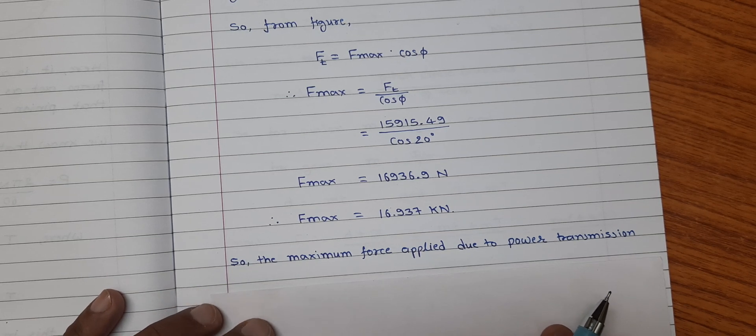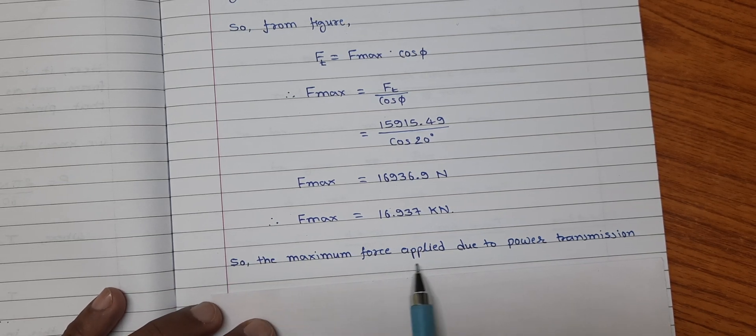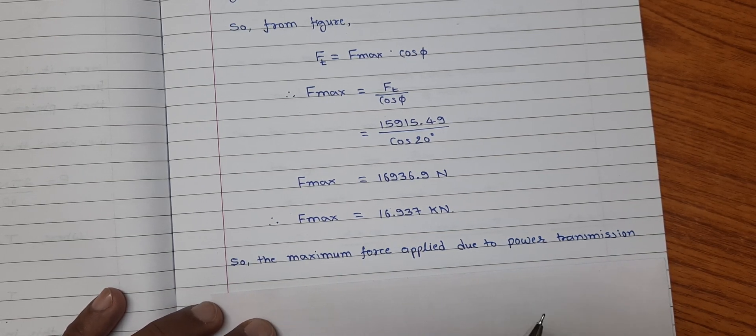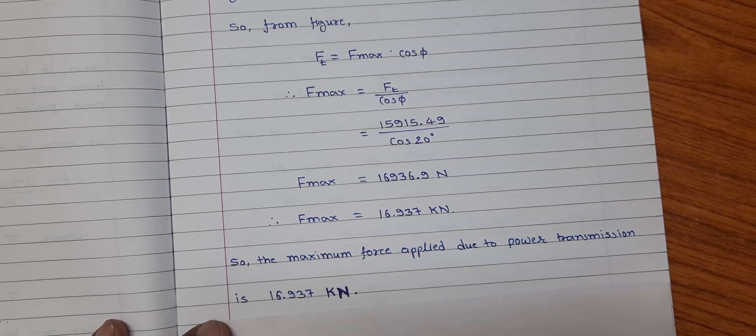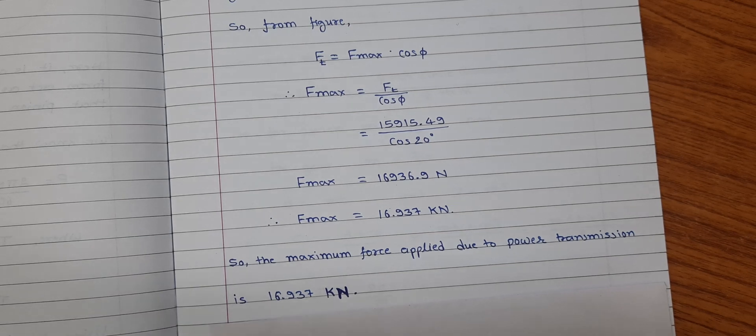So we conclude that the maximum force applied due to power transmission is 16.937 kilo newton. Thank you friends.